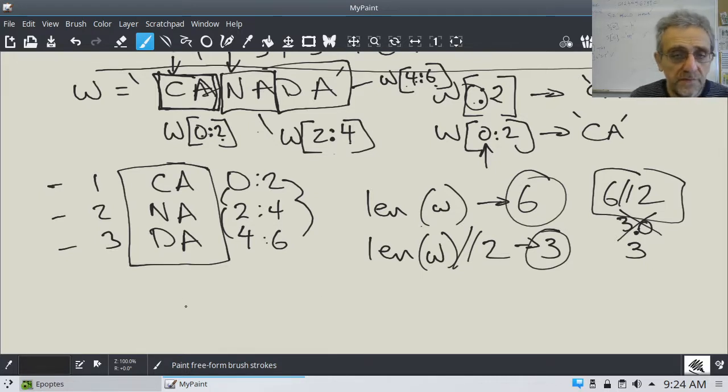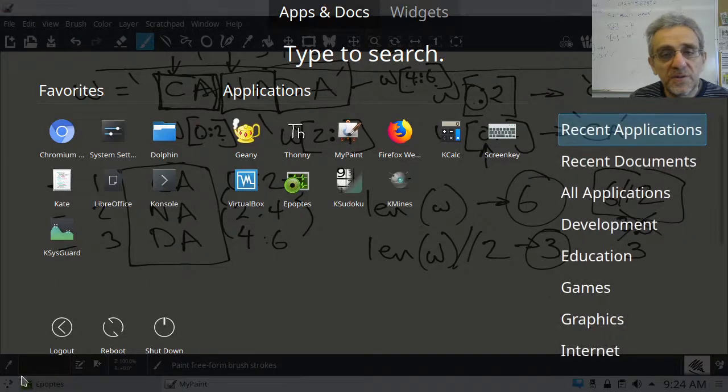And that number is how many times I have to iterate over the string. So, let's try and write some code at this point. I think I have an idea how to generate CA and NA and DA.